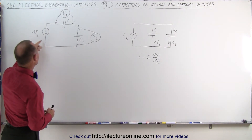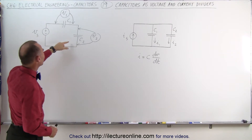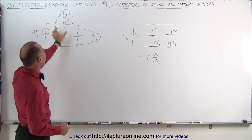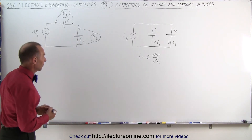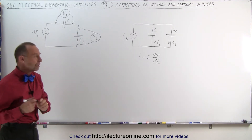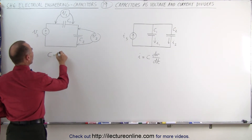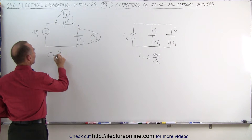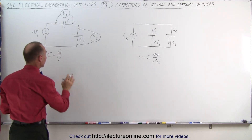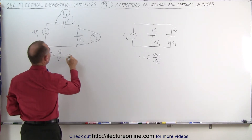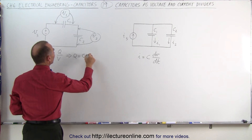In the first circuit we have a voltage source and two capacitors in series. The question is how much voltage will be across the first capacitor and what will be the voltage across the second capacitor. Remembering the definition of capacitance: capacitance is equal to the ratio of the charge that collects on the capacitor divided by the voltage across it. Solving for Q, the charge on the capacitor equals C times V.